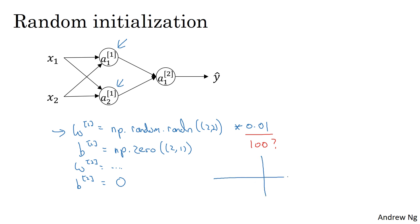Because if you're using a, say, tanh or sigmoid activation function, or if you have a sigmoid even just at the output layer, if the weights are too large, then when you compute the activation values, remember that z1 is equal to w1x plus b, and then a1 is the activation function applied to z1. So if w is very big, z will be very big, or at least some values of z will be either very large or very small. And so in that case, you're more likely to end up at these flat parts of the tanh function or the sigmoid function, where the slope or the gradient is very small, meaning that gradient descent would be very slow, and so learning would be very slow.